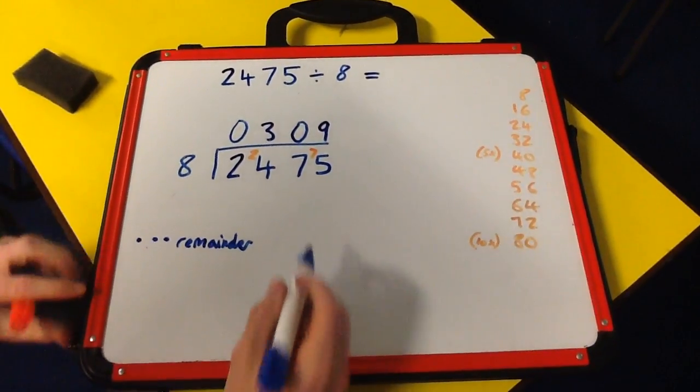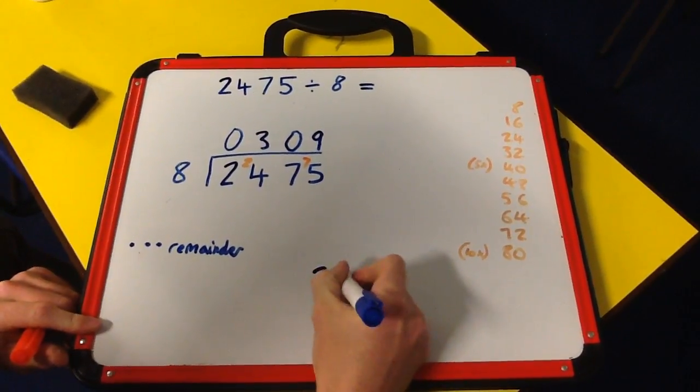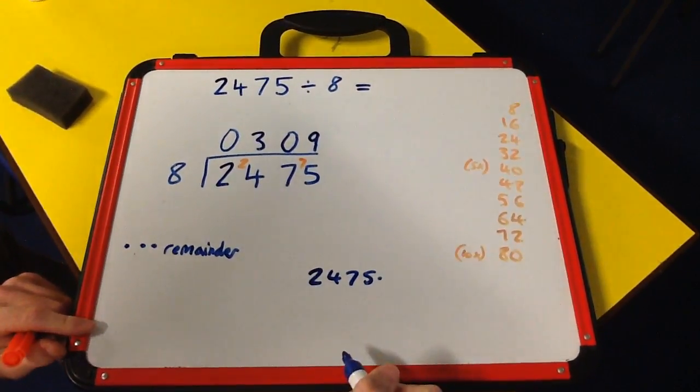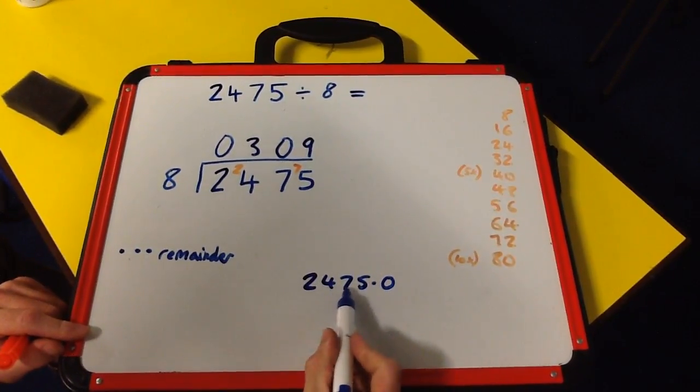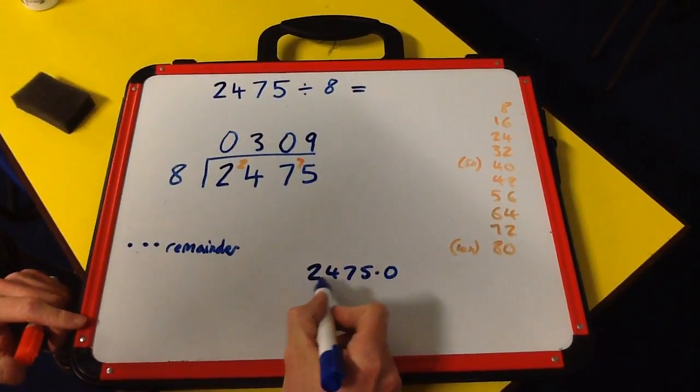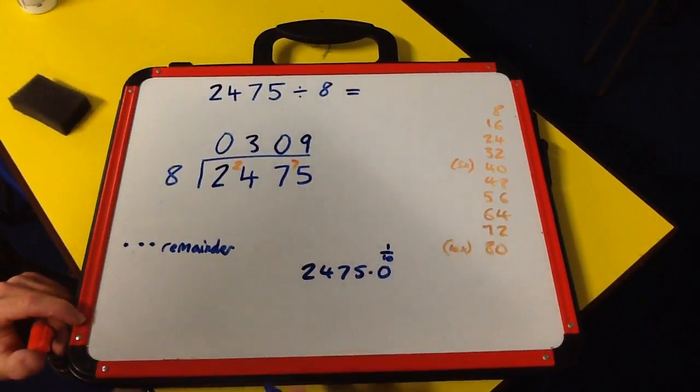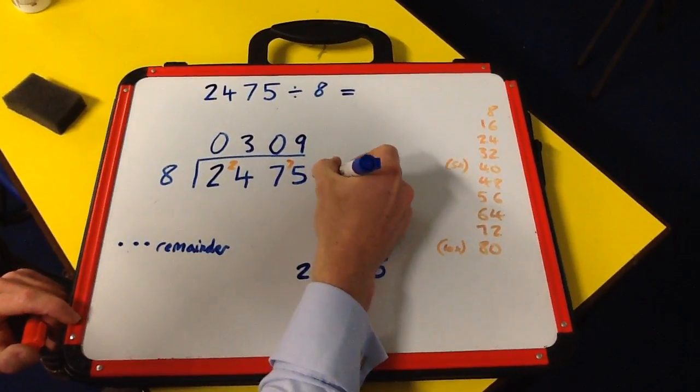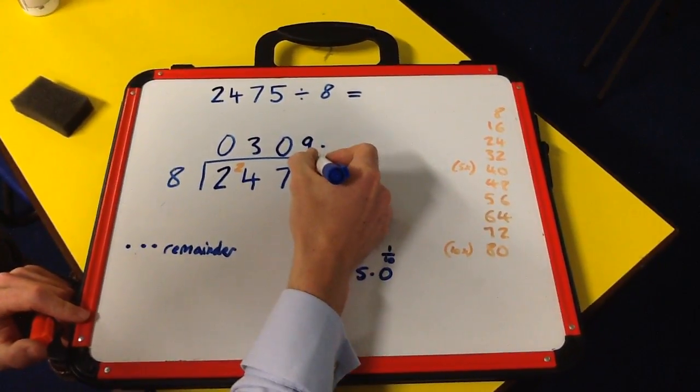We need to extend 2475 by showing tenths after the decimal point. 2475.0 has exactly the same value as 2475—we're just showing that we've got zero tenths. I'll add the decimal point here and extend my answer line above because we're now talking in tenths.